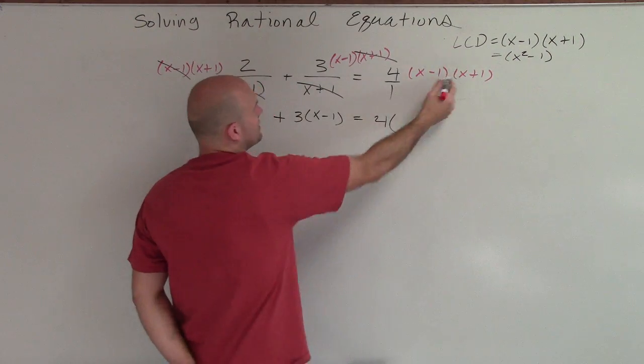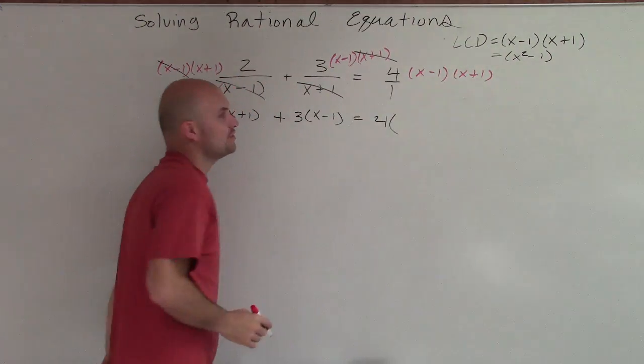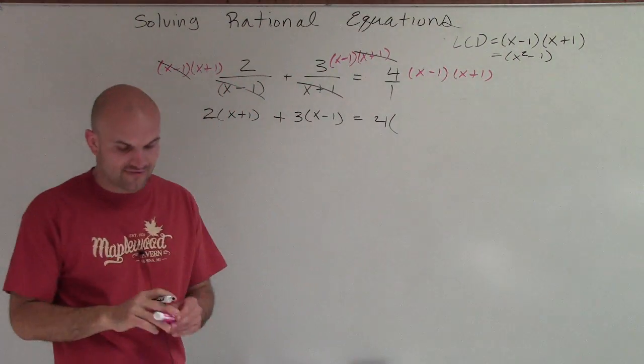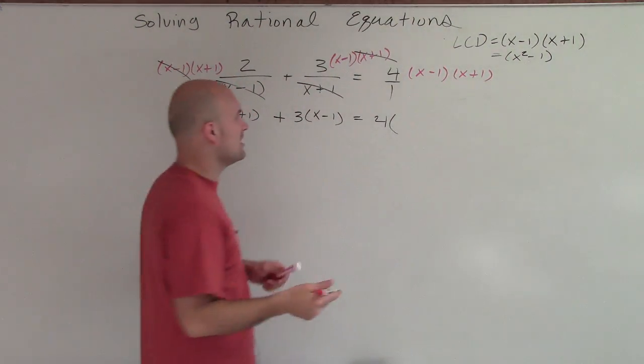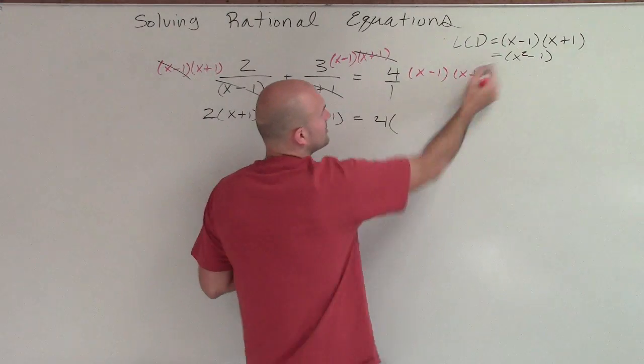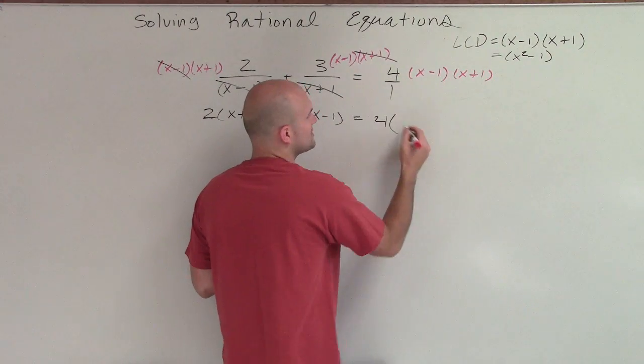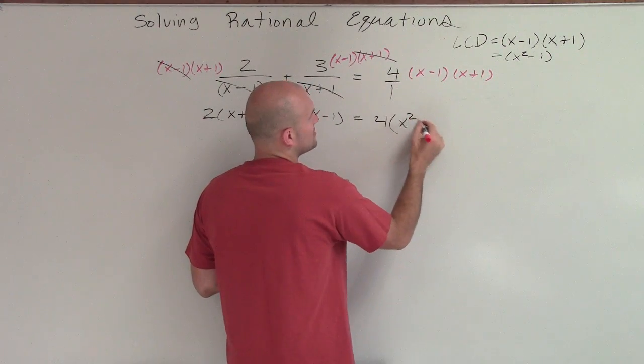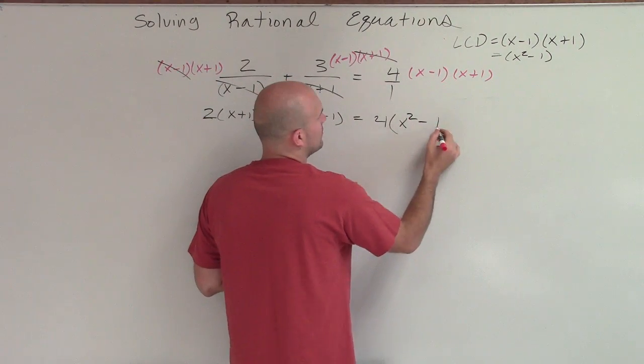However, in this case, neither the x minus 1 nor the x plus 1 divide out on the last term. So I am going to multiply this through to give me x squared minus 1.